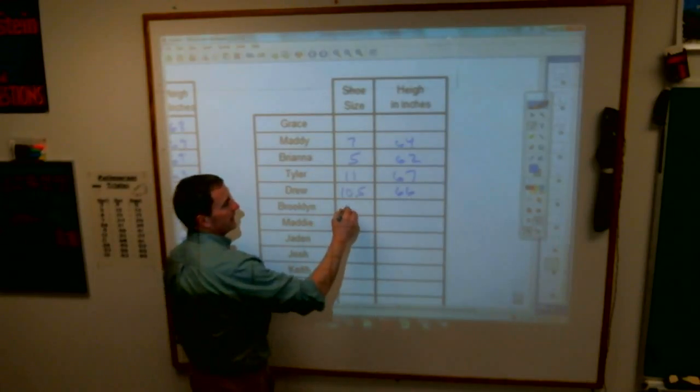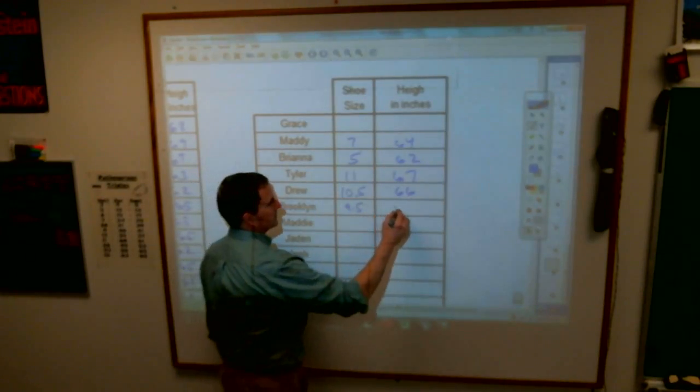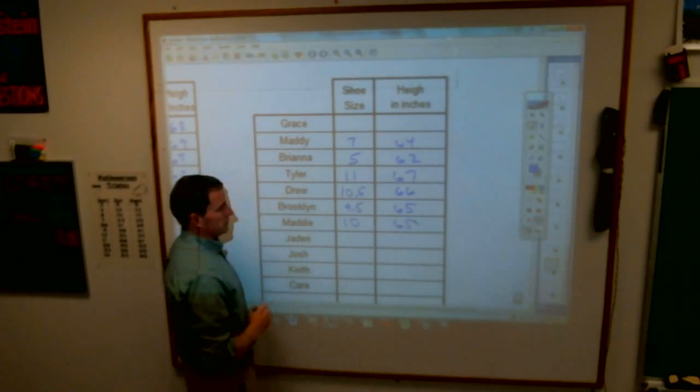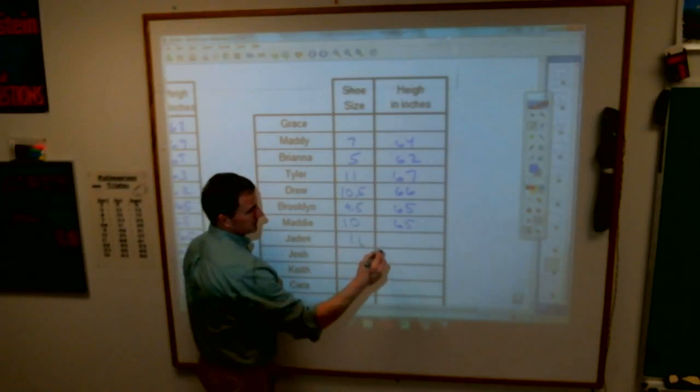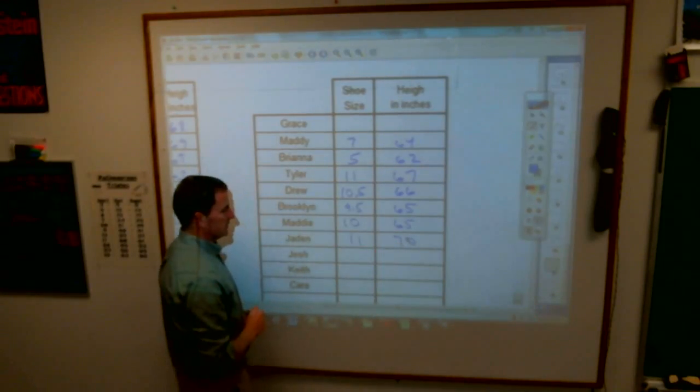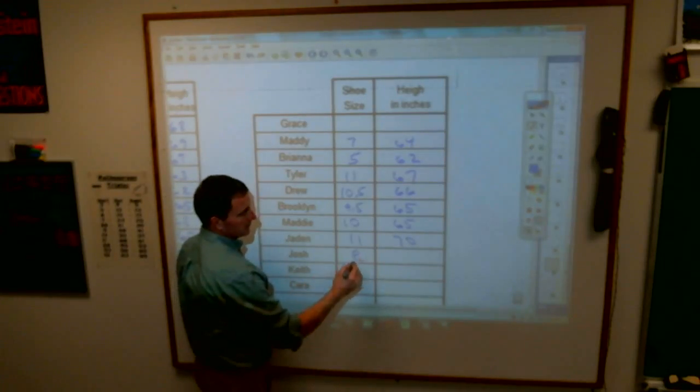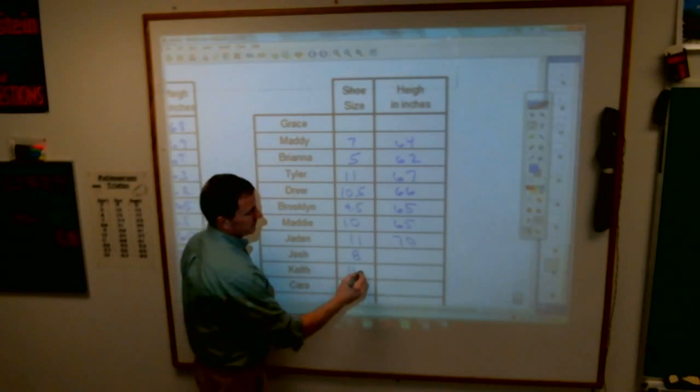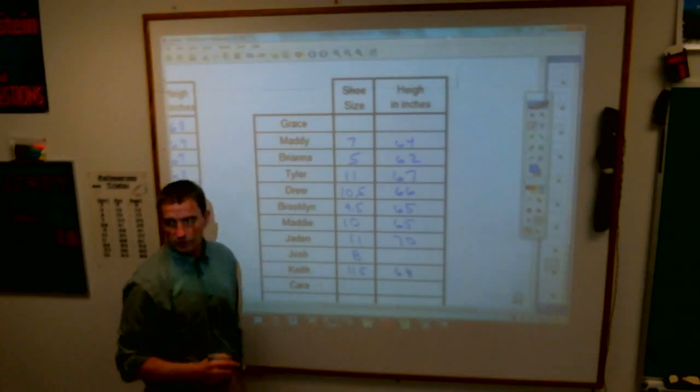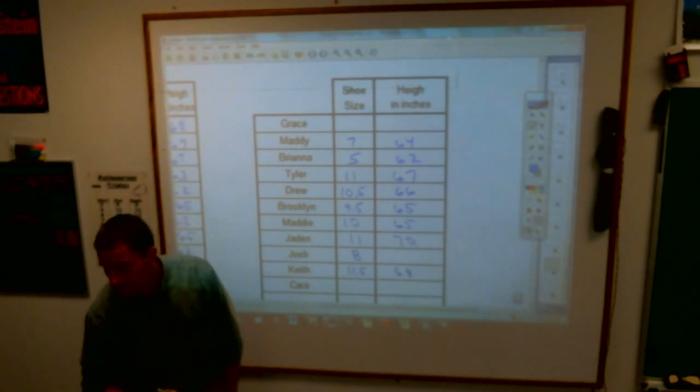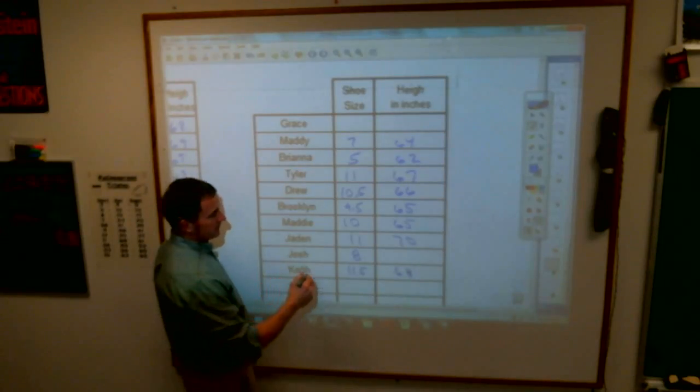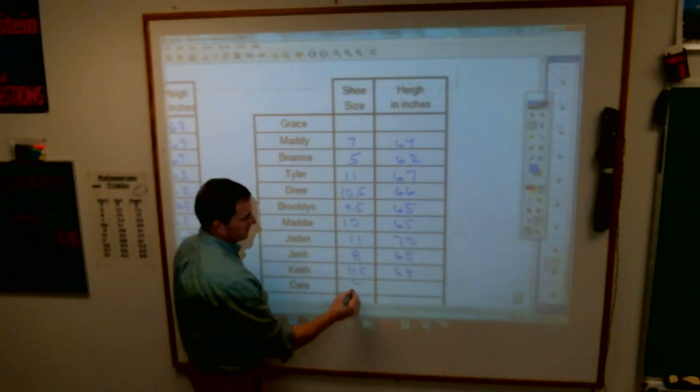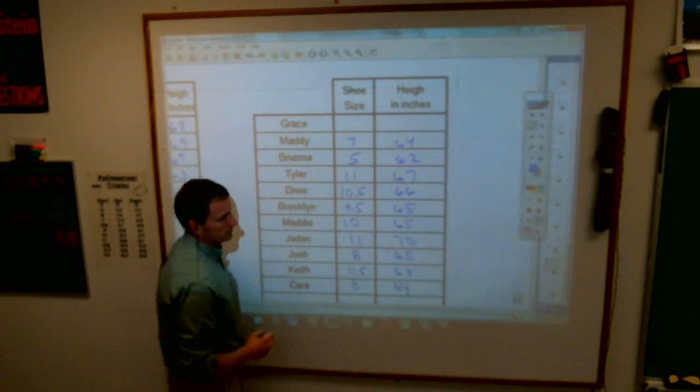Brooklyn? 9.5. And height? 65. Manny? 10, 65. James? 11, 70. Somebody breaks the beat. Josh? 8. Height? I don't know. Keith? 9. Height? 68. Back up there. You're an inch shy of that. So 65. And Winkman? 8, 64. Perfect.